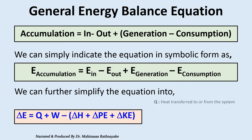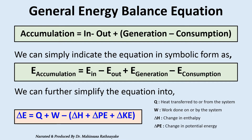Here, Q indicates energy transferred to or from the system. W indicates work done on or by the system. Delta H indicates change in enthalpy, delta PE indicates change in potential energy, and delta KE indicates change in kinetic energy.